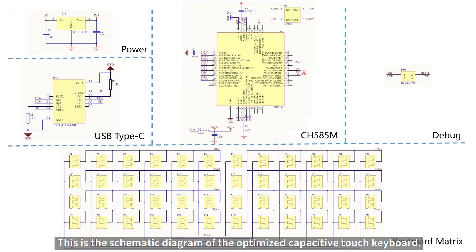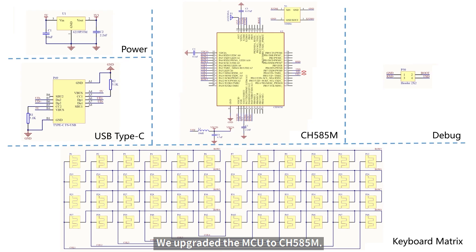This is the schematic diagram of the optimized capacitive touch keyboard, which upgraded the MCU to CH5A5M. Of course, the circuit is also applicable to CH5A2M because the PCB package of CH5A2M and CH5A5M is the same. The values of some components need to be fine-tuned. If necessary, you can refer to the relevant information of CH5A2M.